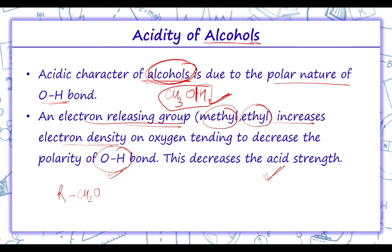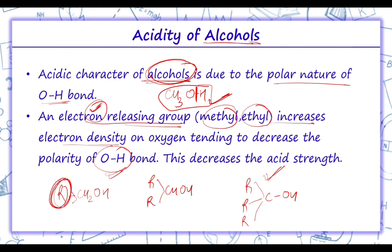We have primary alcohol, then secondary alcohol, and then tertiary alcohol. The acidic character decreases with an increase in electron-releasing groups. Primary alcohol has one electron-releasing group, secondary has two, and tertiary has three. These electron-releasing groups decrease the acidic strength of alcohols.